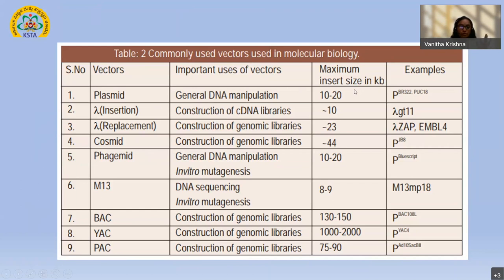The most common, simplified, easy-to-handle vector type is plasmid vectors, used for all kinds of general DNA manipulations. The maximum insert size for plasmids is 10 to 20 kb. Examples are pBR322 or pUC18. If the aim is to construct libraries — fragmenting a whole organism's genome, cloning individual fragments into different vectors, and saving the complete genome — you will choose different vector types based on insert size requirements.